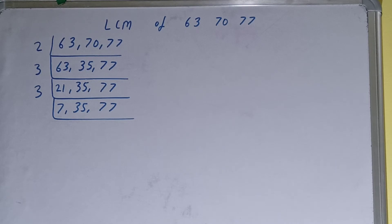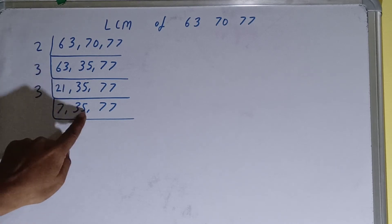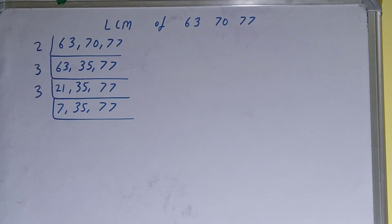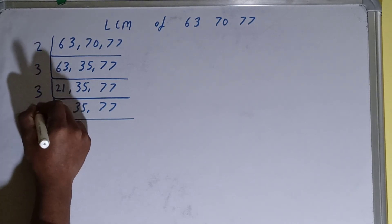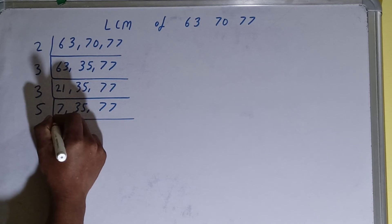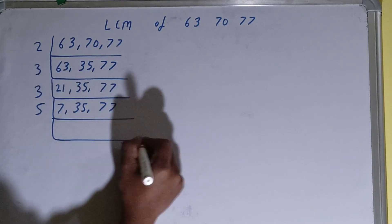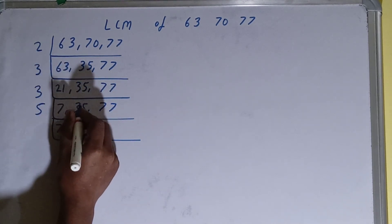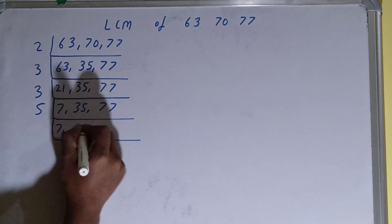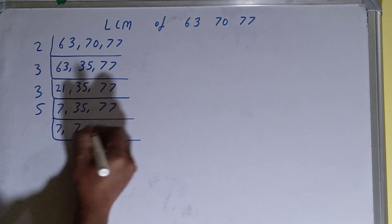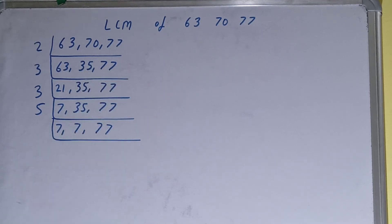The second number, 35, is divisible by 5, so we divide it. 7 is not divisible by 5, so we copy it down. 35 becomes 7, and 77 remains as 77. Now none of the numbers are divisible by 5, so we move to the next lowest prime number, which is 7.